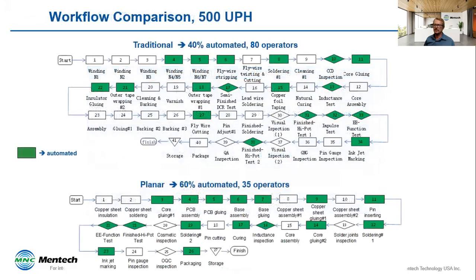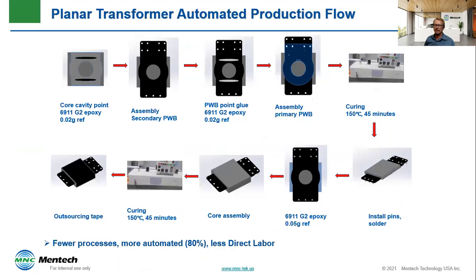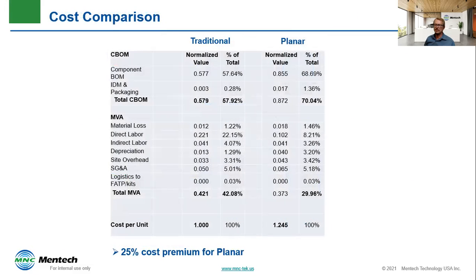We don't show on the table efficiency improvements and such. Here's a comparison of production lines for traditional and planar transformers with 500 units per hour throughput. The traditional line shows fewer green automated boxes. Planar can automate about 20% more than traditional and requires less than half the operators. All of these steps are automated in planar manufacture — not shown are things like inspection steps and packaging. This cost comparison example is for a complicated design where planar is pretty cost competitive. Simpler designs will have a higher delta between traditional and planar. Manufacturing costs are less for planar due to automation and simpler processes, but most of the premium is due to component costs.